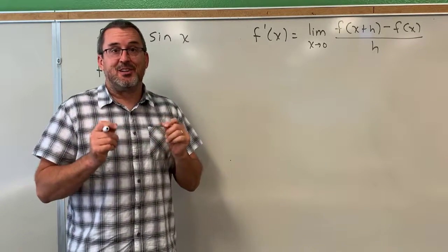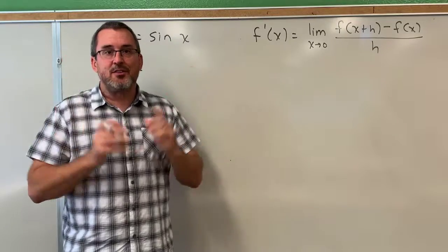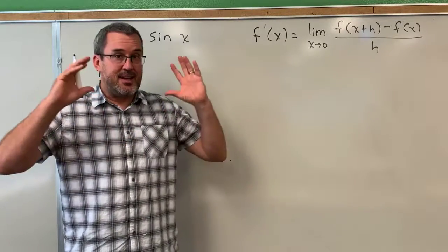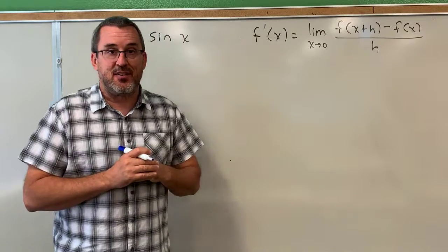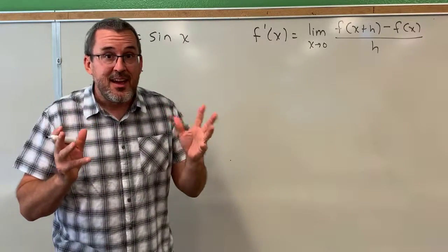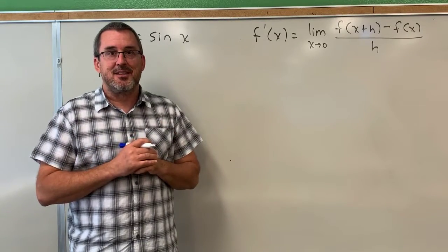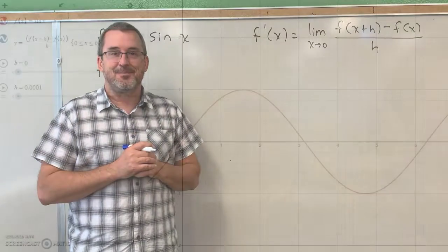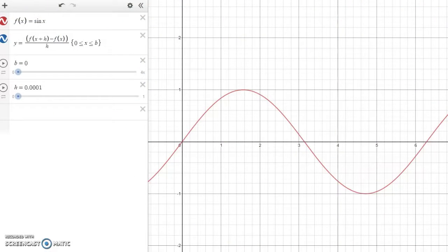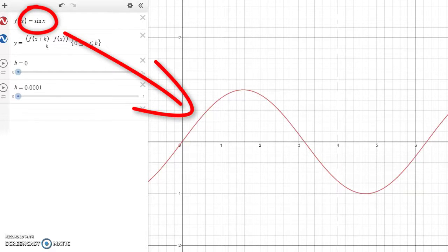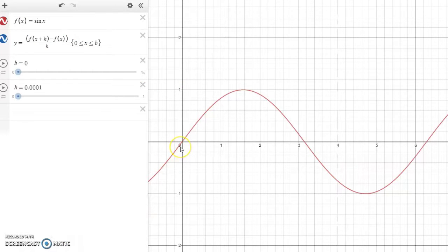First, we are going to take a look at Desmos and look at a graphical representation. We're going to examine the rate at which the sine of x function is changing graphically and see if the idea of the derivative being cosine of x does indeed make sense. We begin exploring by looking at the graph and thinking about the rate at which this function is increasing or decreasing as our input quantity increases.